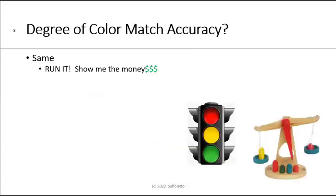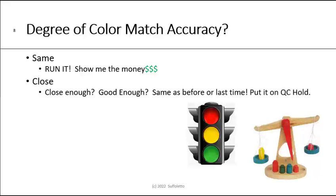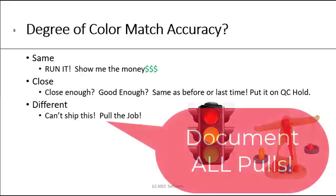Now that we've looked at the pair, we have to make a judgment about the degree of their color match accuracy. I would put these into three categories: the first is 'same' — when they're the same it's obvious, people don't disagree, so you would run it. You make money by running. The second category is 'close' — here people do disagree about how close it is. Is it close enough? Is it good enough? Is it the same as before? If it's a question, we might want to run it anyway but put it on hold for QC to review. The third category is 'different' — again it's obvious, people don't disagree when they're the same and don't disagree when they're different. People typically disagree when they're close. If it's different you obviously cannot ship or run it — many times you might have to pull the job.